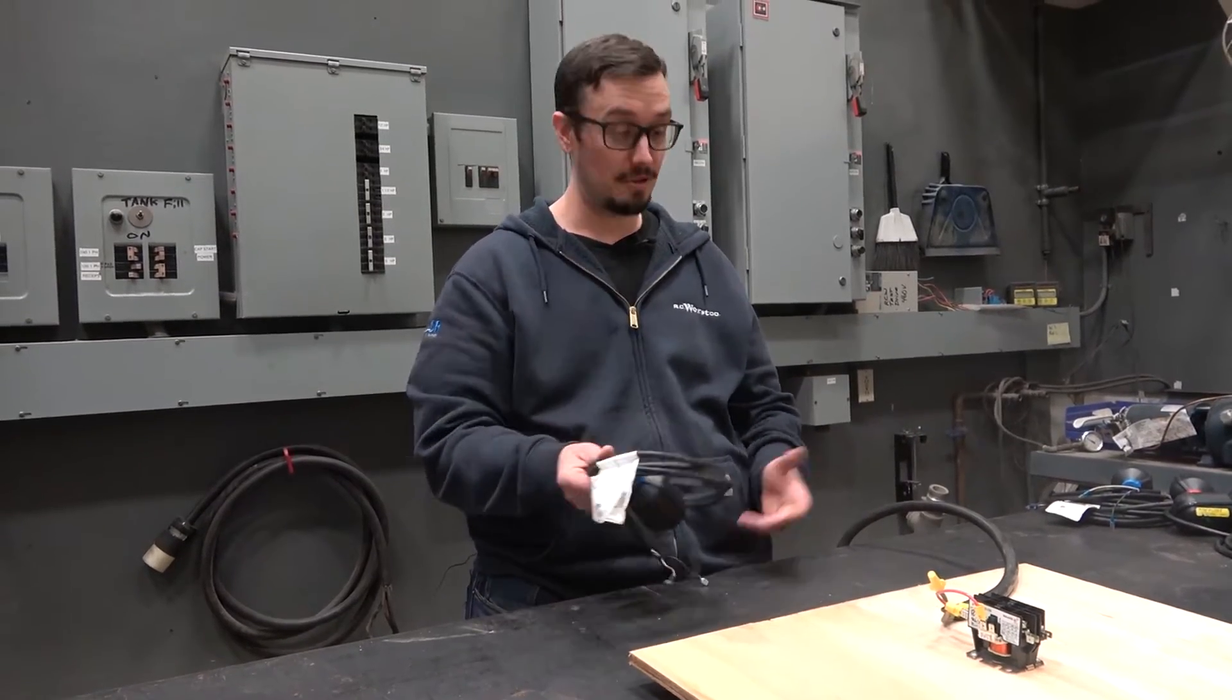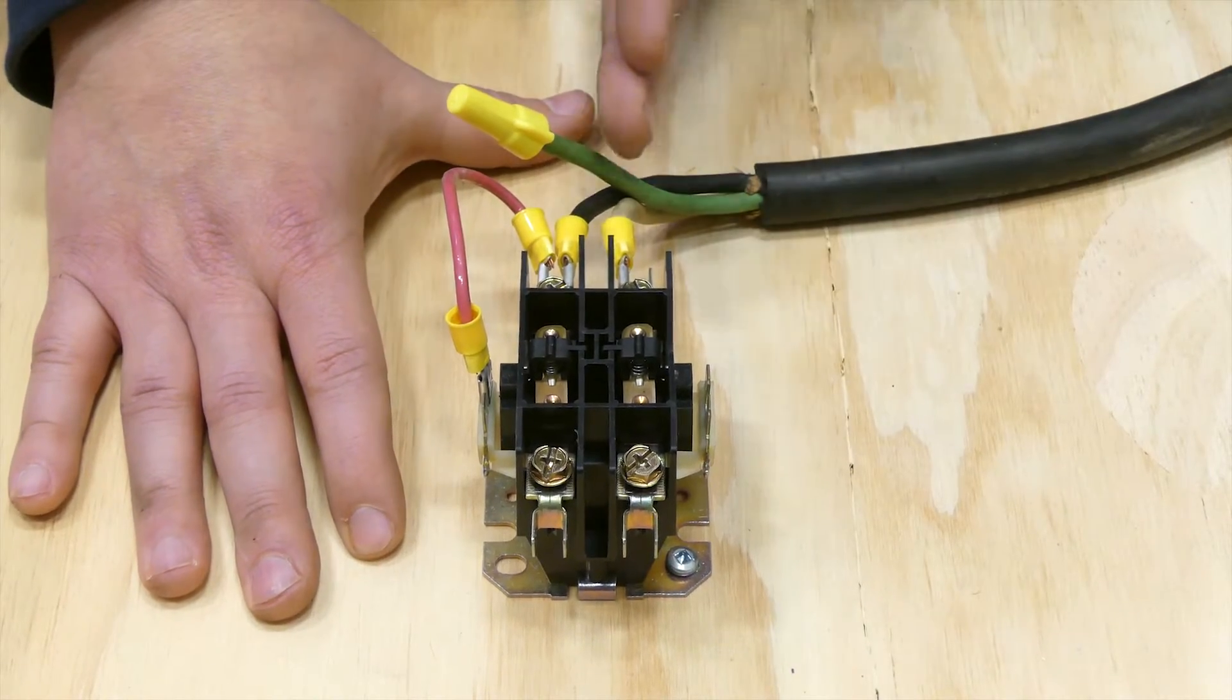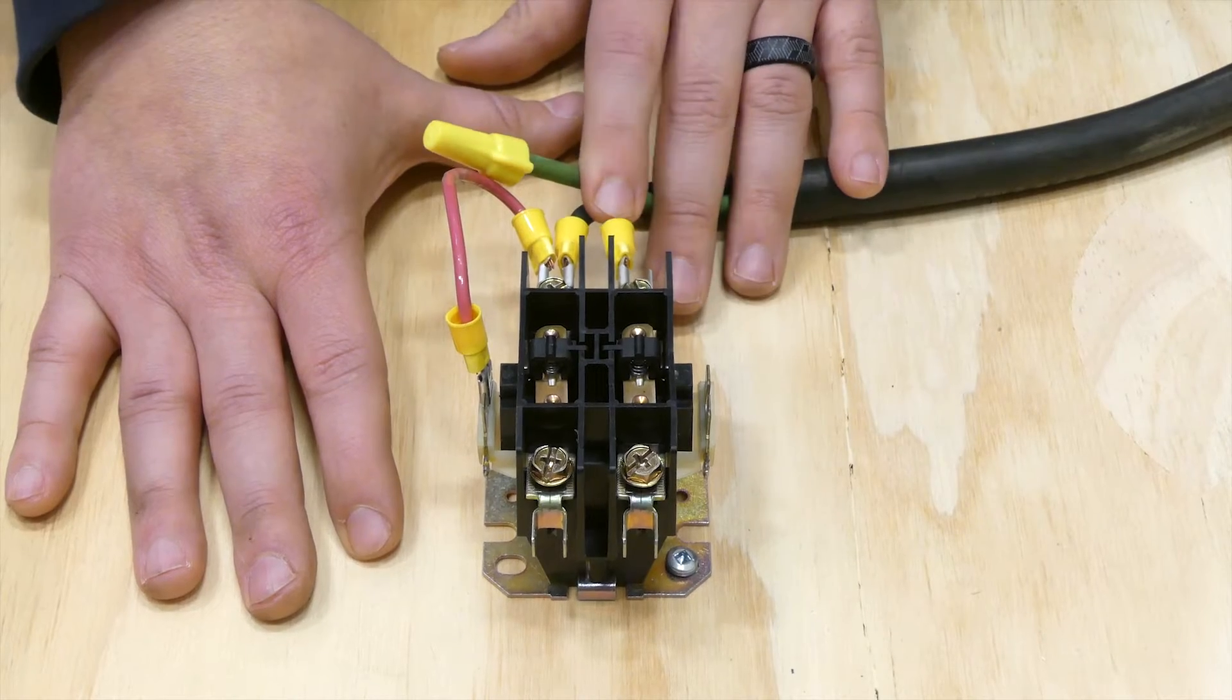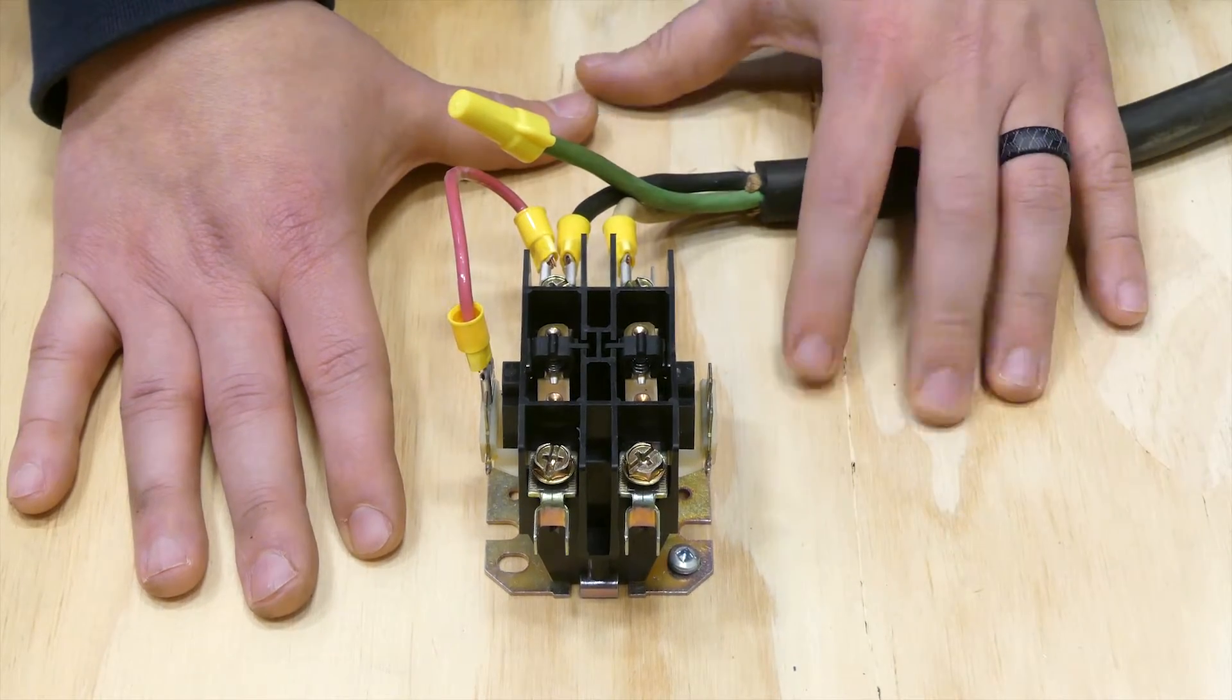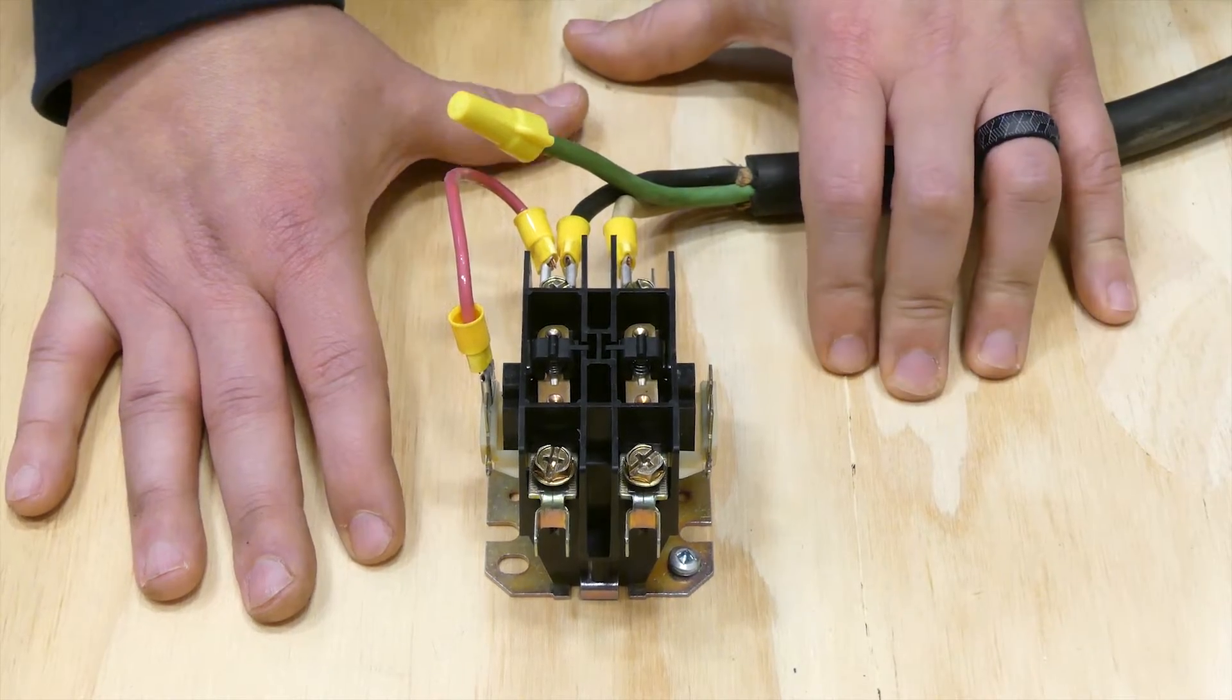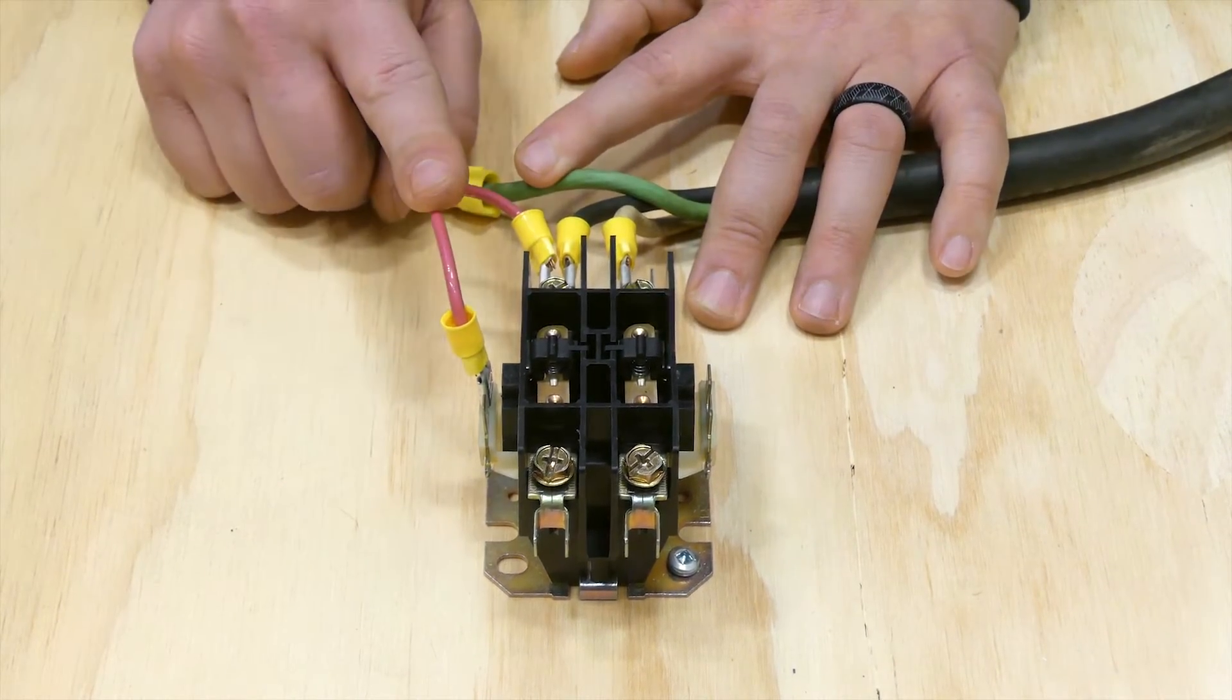Okay, so here we've got our contactor. We've got incoming power going through here. This one just to bear in mind is a 220 volt coil, so we've got 120 volts here and 120 volts here. And of course I do have the power off right now so I'm at no risk of being shocked.